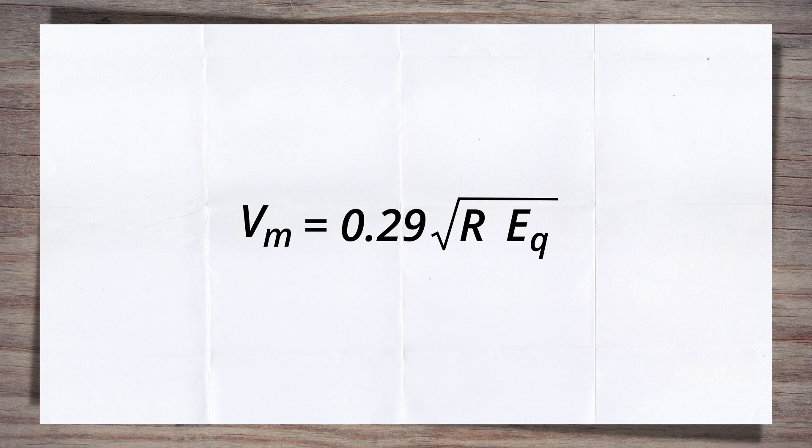The equation in its current form includes the equilibrium cant, EQ, whereas we need to use the cant value currently on the track, which will be the applied cant, EA.